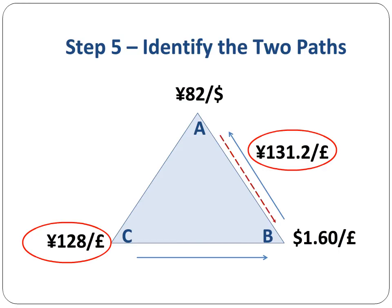Another alternative would be to start with Bank A, do a transaction with Bank B, and finally with Bank C as shown by the red dashed lines. We can do calculations both ways and see which one of the two paths is profitable, or we can analyze the two alternatives and rule out the unprofitable one.